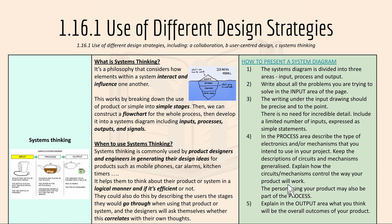Lastly we have system thinking. System thinking is a philosophy that considers how elements within a system interact and influence one another. This works by breaking down the use of a product or system into simple stages. Then we can construct a flow chart for the whole process and develop it into a system diagram including inputs, processes, outputs, and signals.